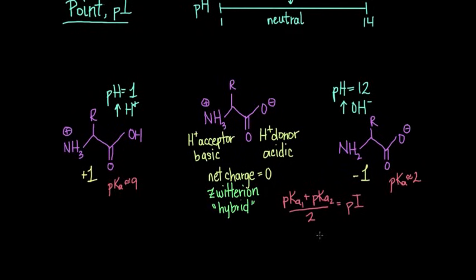So taking the average pKa for the amino group and then the average pKa for the carboxylic acid group, and we divide by 2, then we get 11 over 2, and we come to an isoelectric point of 5.5.